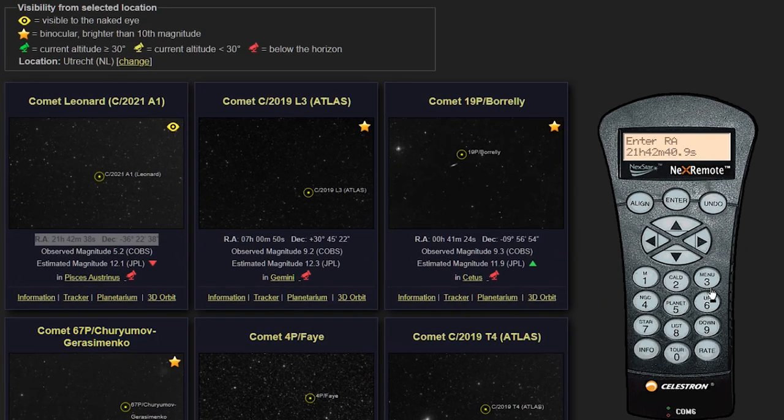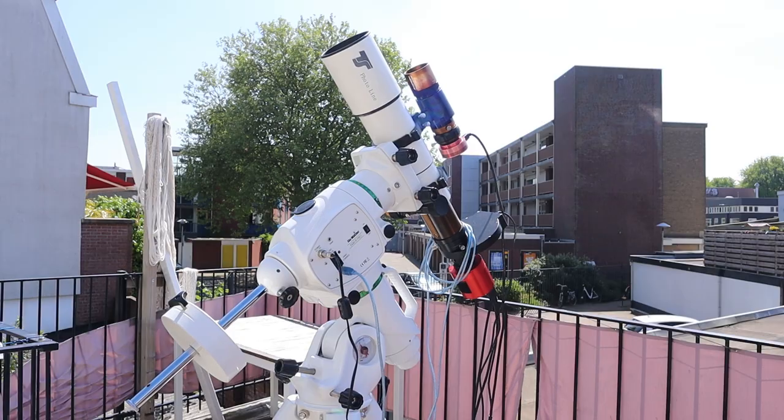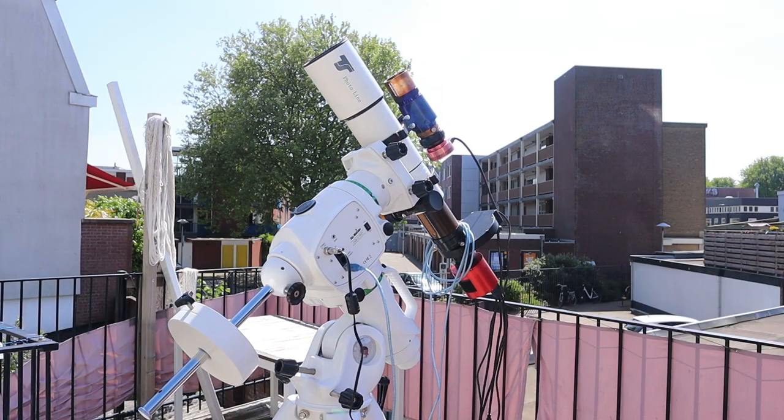Declination coordinates are given in degrees, arc minutes and arc seconds. Right ascension coordinates are in hours, minutes and seconds. The telescope will then automatically slew to those coordinates and track the comet in the night sky.